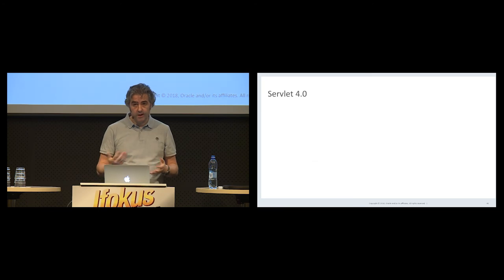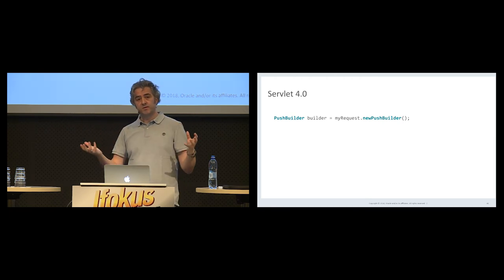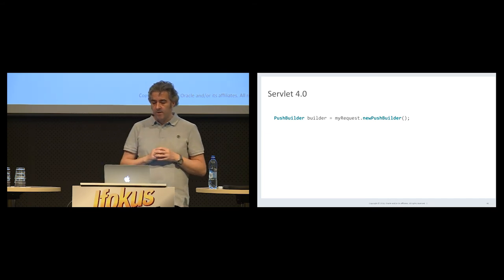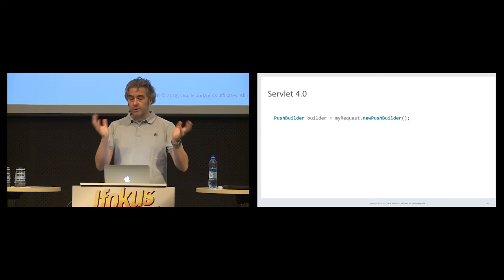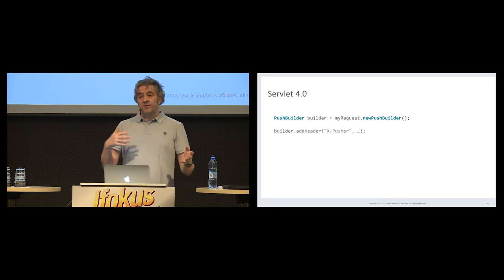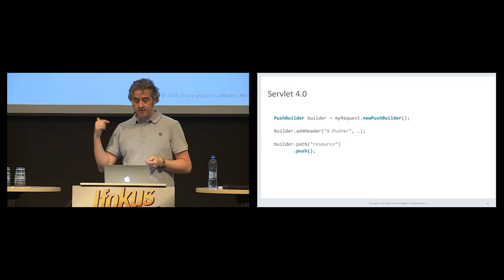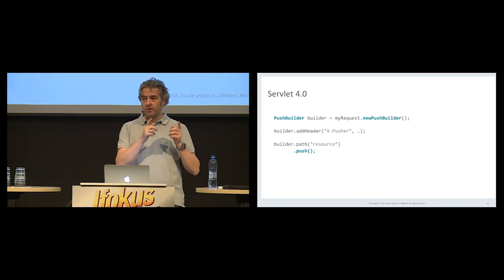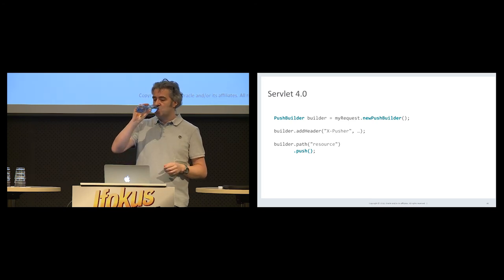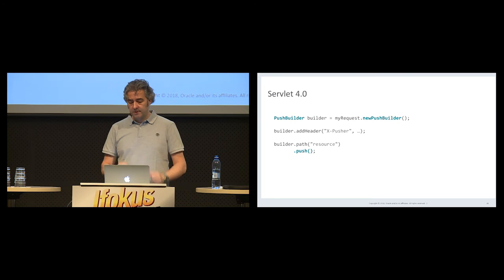If you want to use server push, you'll have to adapt your code. Server push is always based on an incoming request — it's not like SSE; it's not an asynchronous push mechanism. Given an incoming request, the server can answer with just one response or more. We take that request, call newPushBuilder to get the push builder for that given request, set headers that will be attached to the pushed response, specify the path, and invoke the push method. This tells the server container to try to push these resources. There's no way to know if the resources will effectively be pushed, because the resources might already be in the client cache.